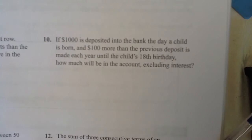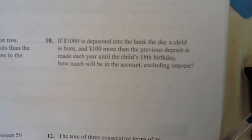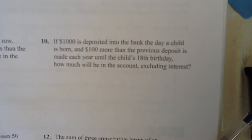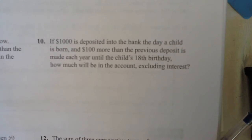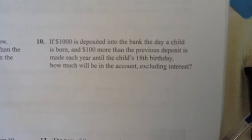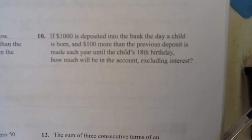A thousand dollars is deposited into the bank the day a child is born. In other words, you're starting with a thousand. In other words, A, the first term, is a thousand. And a hundred dollars more than the previous deposit is made each year until the child's 18th birthday. So D is a hundred. It goes up by a hundred. And it goes on until the 18th birthday. So how much is there in total?